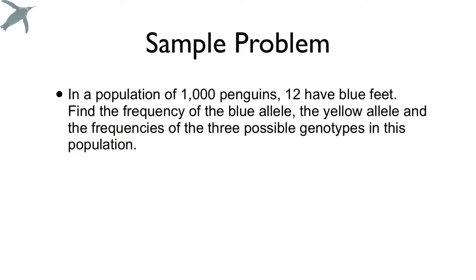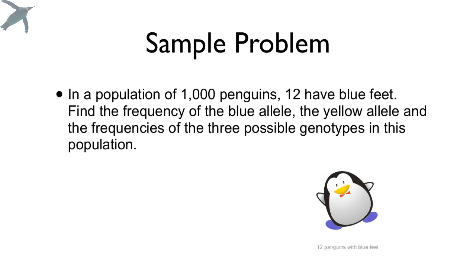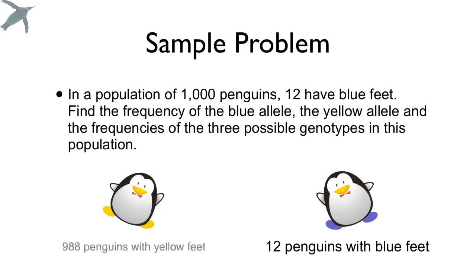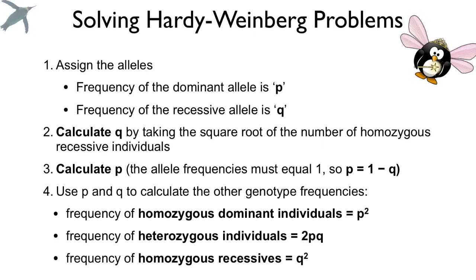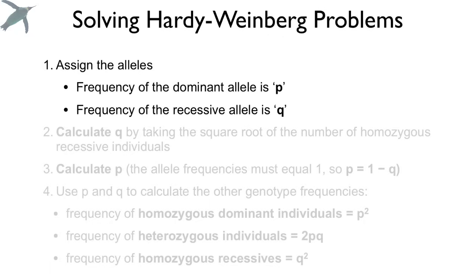Here's the sample problem. We have a population of 1,000 penguins; 12 of them have blue feet, leaving 988 with yellow feet. Find the frequency of the blue and yellow alleles as well as the frequencies of all three genotypes. Here are the four steps to solving Hardy-Weinberg problems. Step one: assign the alleles.